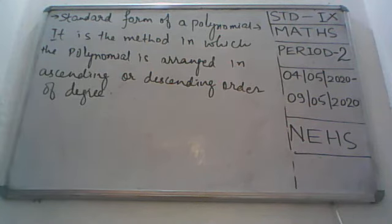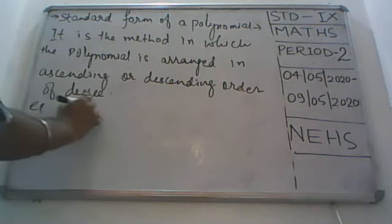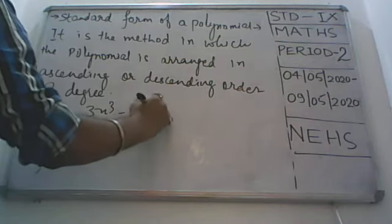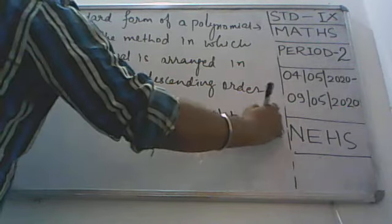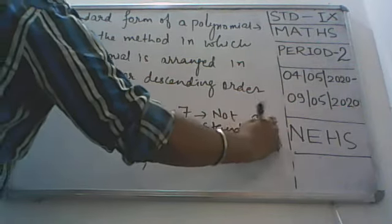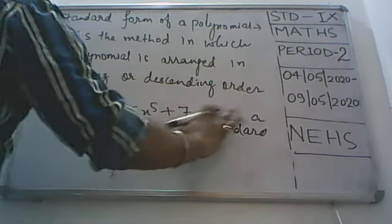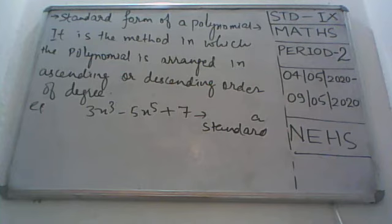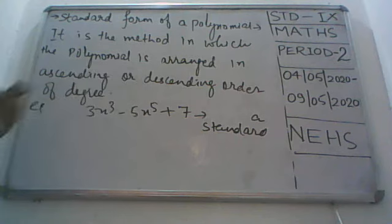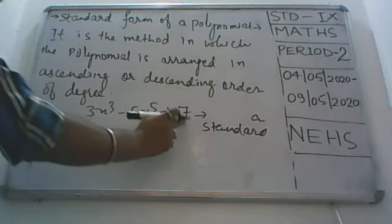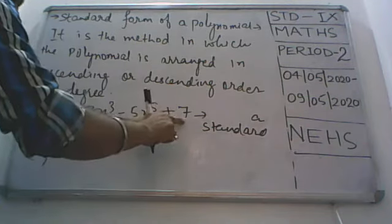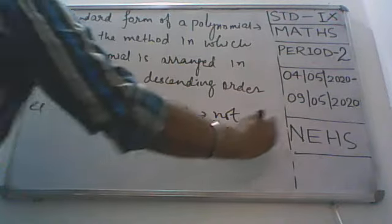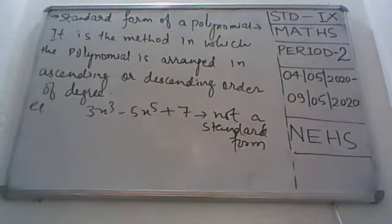This arrangement is called standard form. For example, if I write 3x³ minus 5x⁵ plus 7, this is not a standard form. Why? See — after 3 I have written 5, then 7 appears. Because of that 7, this whole arrangement is not a standard form.